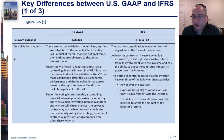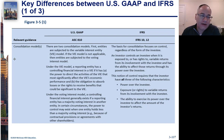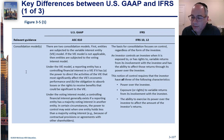IFRS is just focused on control and puts less emphasis on VIEs. An investor controls an investee when exposed to, or having rights to, variable returns from its involvement with the investee, and having the ability to affect those returns through its power over the investee. This notion includes three items: power over the investee, exposure or rights to variable returns from involvement with the investee, and the ability to exercise power over the investee to affect the amount of the investor's returns.